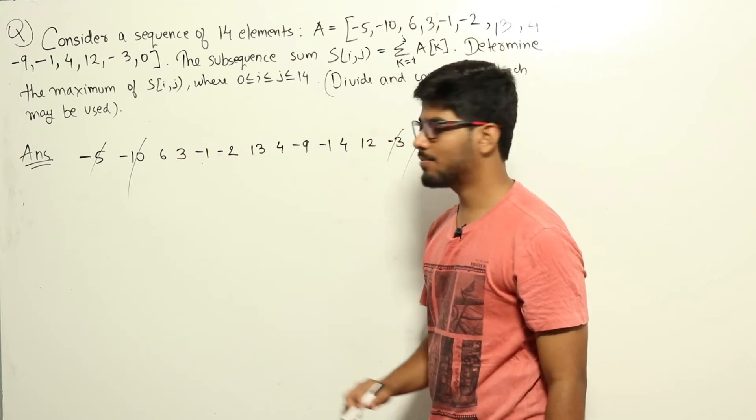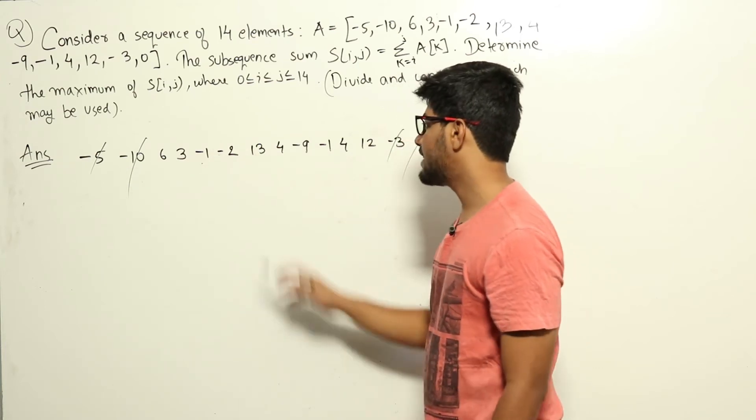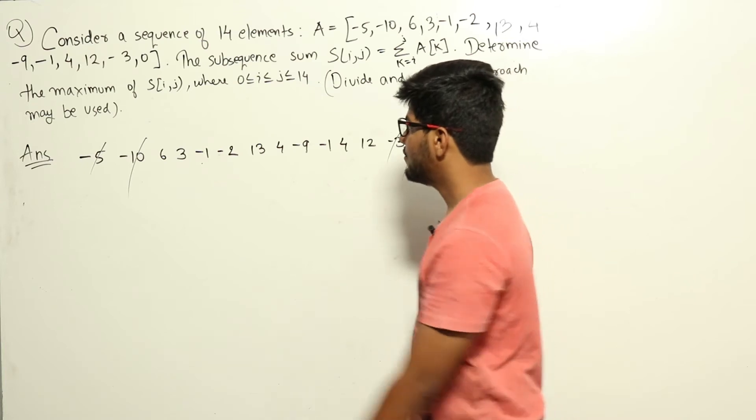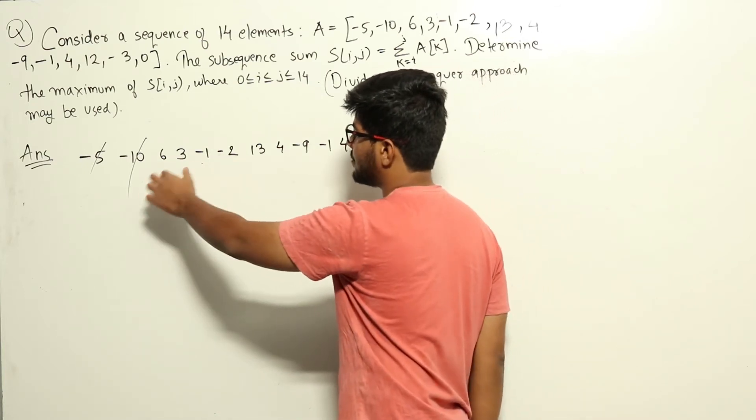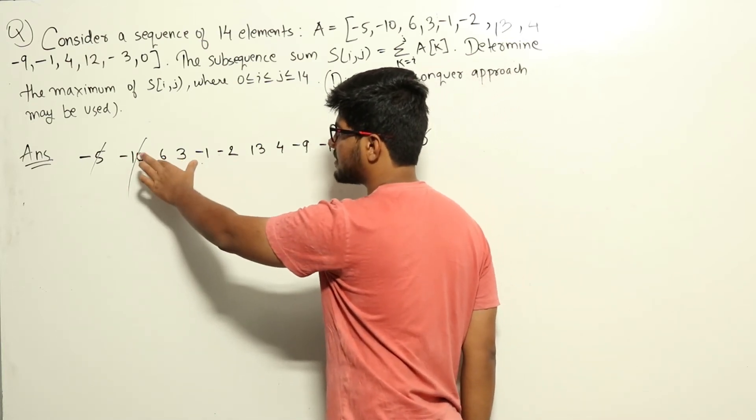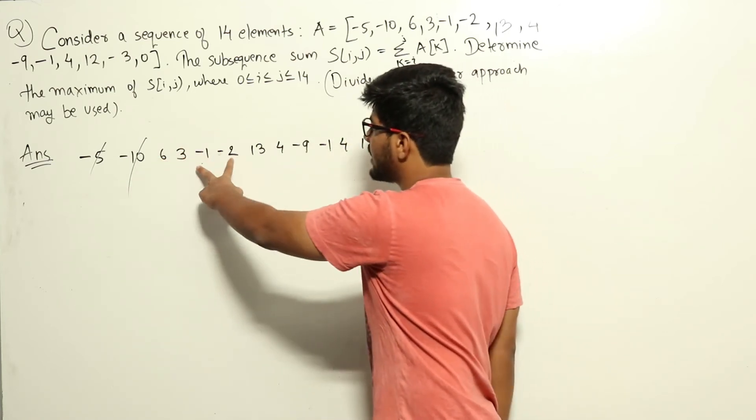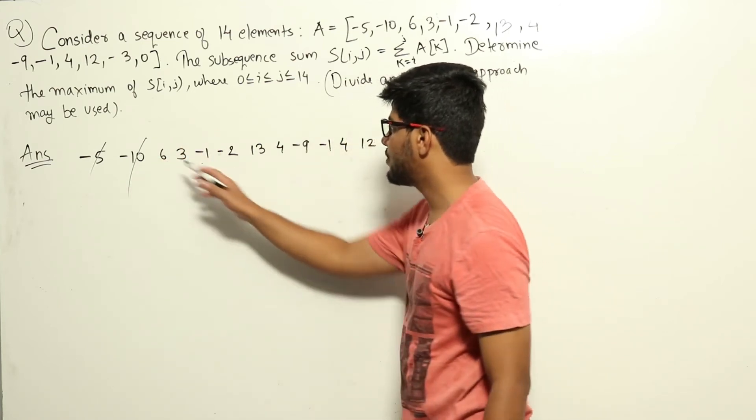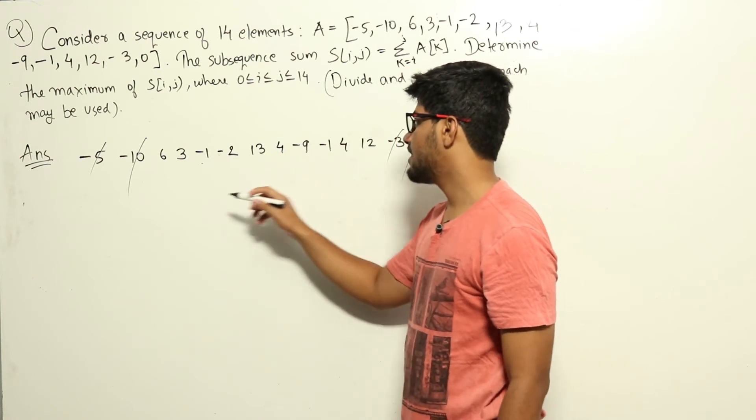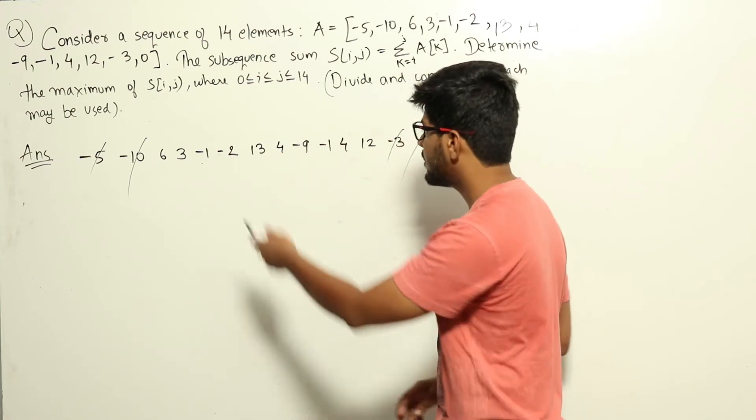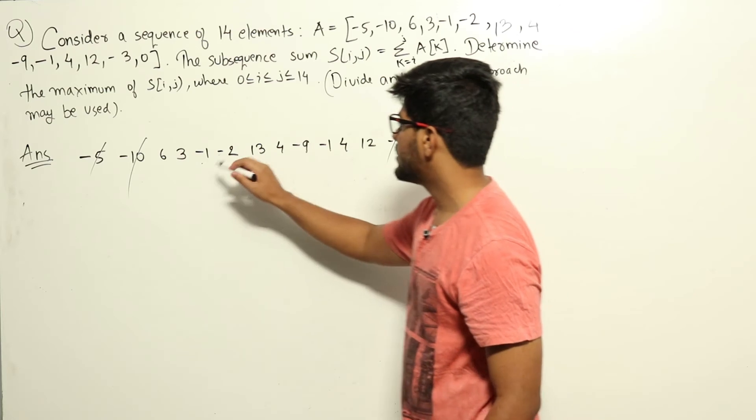If I take all of these five numbers, the total sum would be 6 plus 13, that is 19. Which means that if I was not taking these two numbers, I should have stopped the sequence at 6 and 3 only, that will give 9 only. But if I take these two negative numbers and this number as well, the sum will increase to 19 from 9. That is a very good thing for us, so we'll take these two as well.